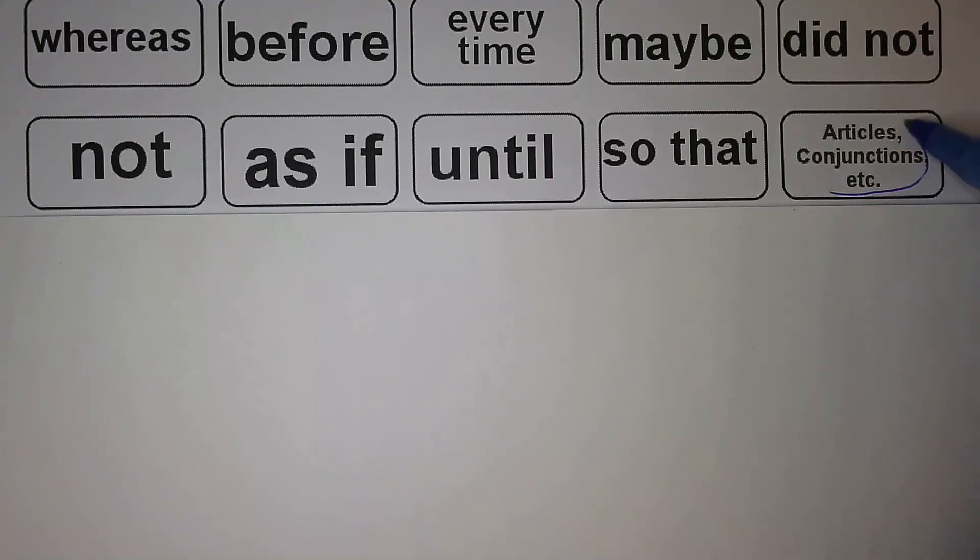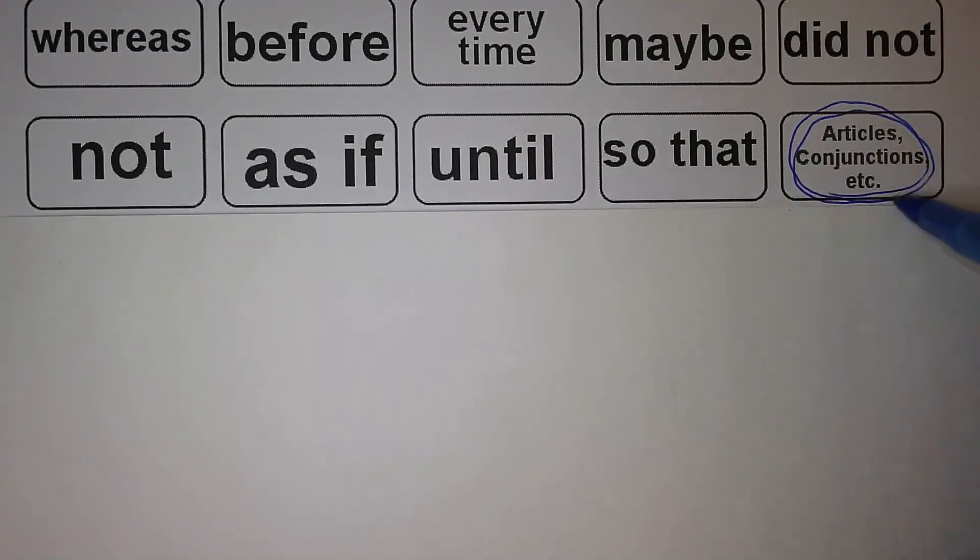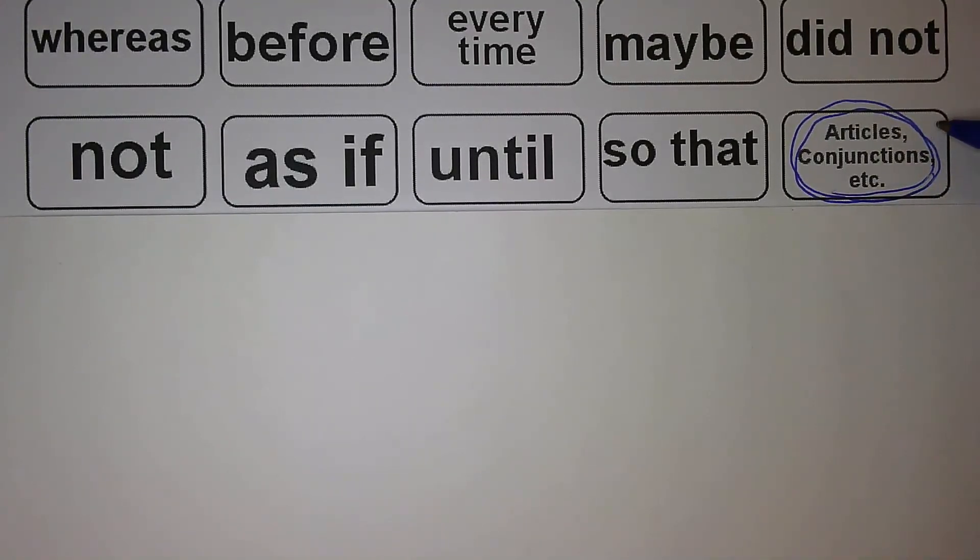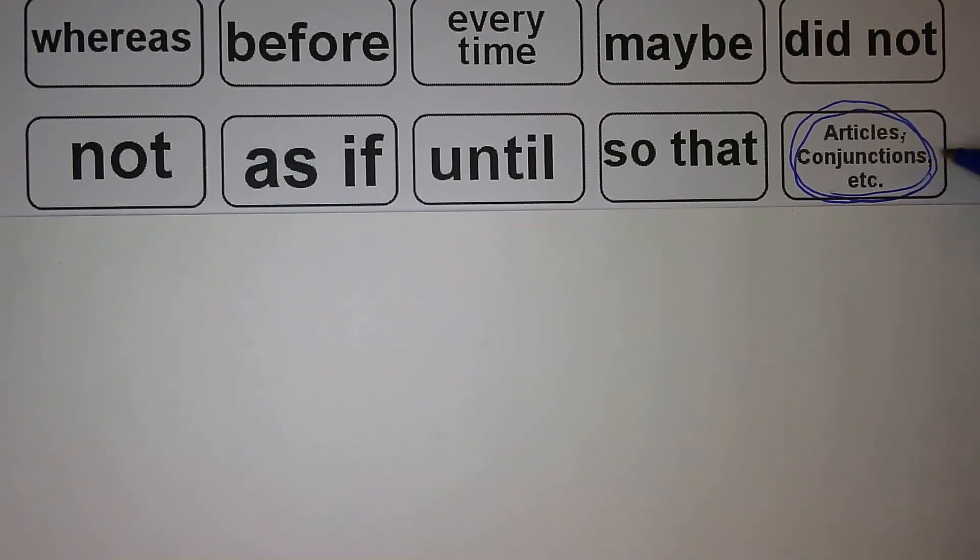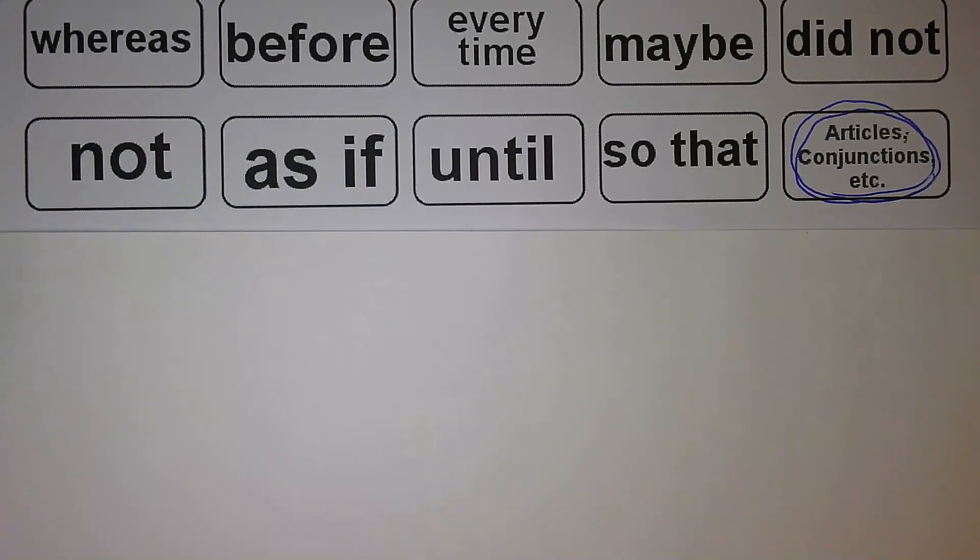Now, these actually have a big name. Nice job, first of all, well done. So when you get to the upper grades, they call them articles or conjunctions. Those are the big fancy names that we give them. In the lower grades, we call them sight words.